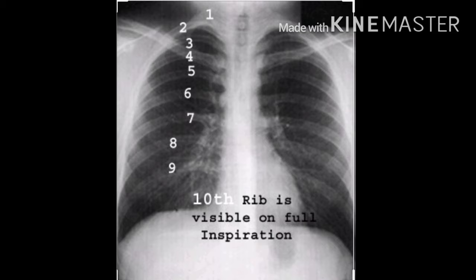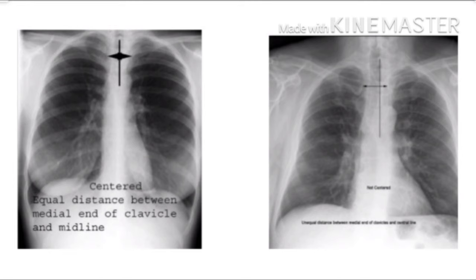The second step is image quality. For inspiration, count the ribs on the right side of the lung — if fewer than 10 ribs are visible, the lung is not well expanded and we may miss some diagnoses. For rotation, check whether the clavicular heads are symmetrical. If they are in the same alignment there is no rotation, but if they are asymmetrical it suggests rotation, and in such cases we may miss some findings in the affected area.